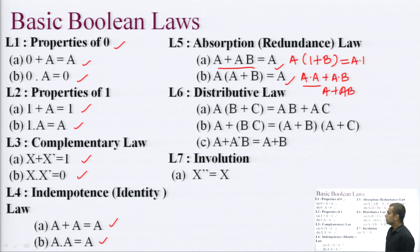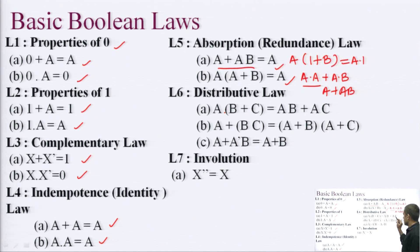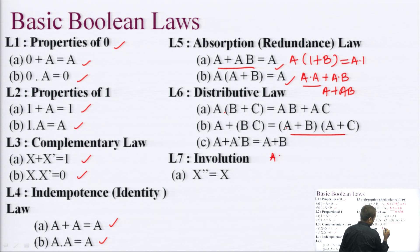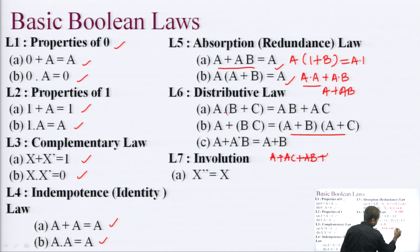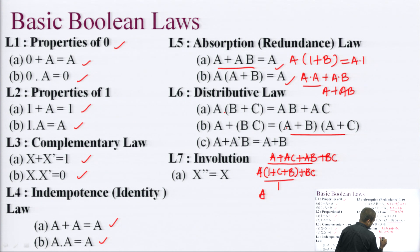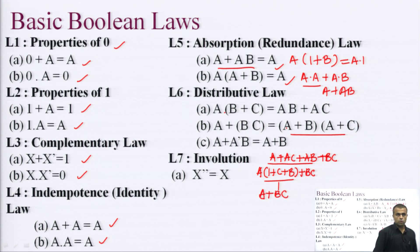The distributive law states A into (B plus C) equals AB plus AC — we simply multiply A into B and A into C. The second form is A plus BC equals (A plus B) into (A plus C). This can be proved by multiplying the right-hand side: A into A is A, A into C is AC, B into A is AB, and B into C is BC. Taking A common from three of these terms gives A into (1 plus C plus B) plus BC, and since (1 plus C plus B) equals 1, it becomes A plus BC, verifying the distributive law.